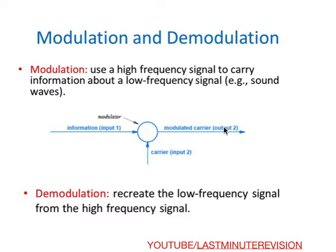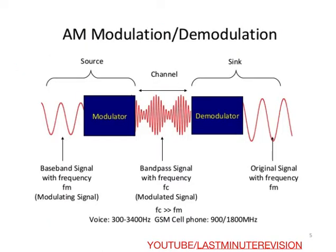At the receiver end, the process is called demodulation. What demodulation does is recreate the low frequency signal from the high frequency signal. So in modulation there is a shift from low frequency to high frequency, and in demodulation there is recovery of the low frequency signal from the high frequency signal.